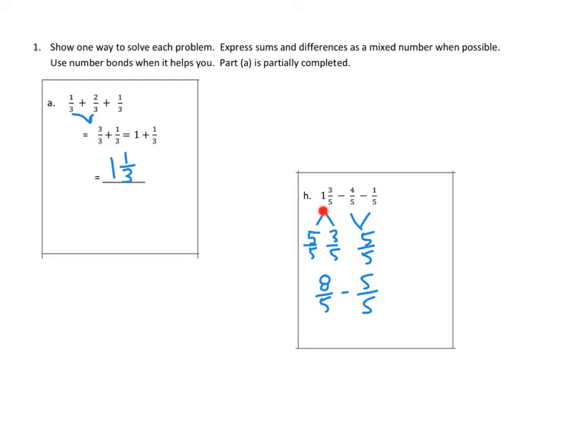And now we can express this as eight-fifths minus five-fifths. So look what we've done here. We've broken our mixed number into a whole and parts and expressed them all in fifths. And we've combined the two parts of our subtraction, minus four-fifths and minus one-fifth, into minus five-fifths. And now we can go ahead and do that subtraction problem. So eight-fifths minus five-fifths is three-fifths. And that's our answer. We don't need to express it as a mixed number because we can't. It's already a simple fraction.